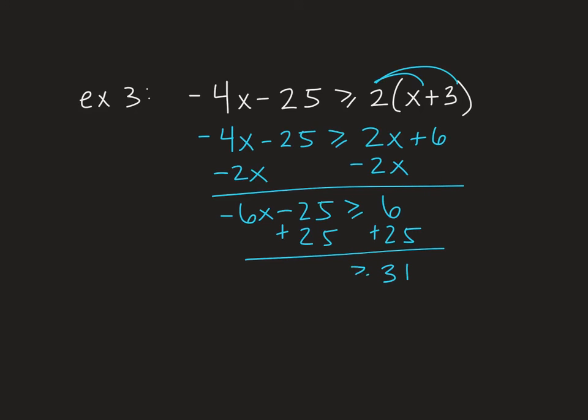So close to having a nice final answer, but that's what happens when you make them up. All right, so we're dividing both sides by a negative number, so we do have to flip the sign. It becomes x is less than or equal to negative 31 sixths. I cannot simplify that at all.